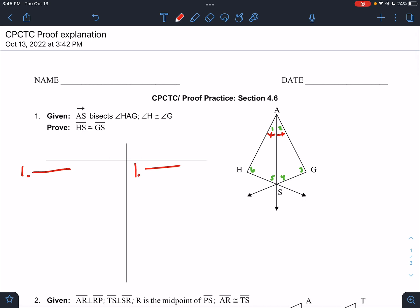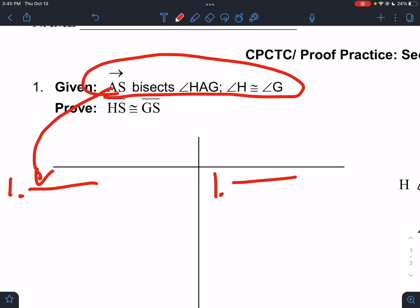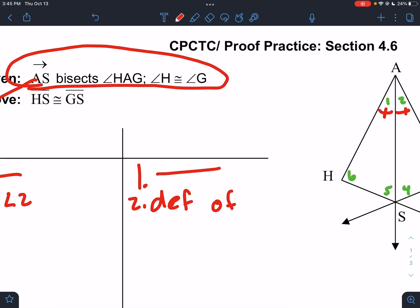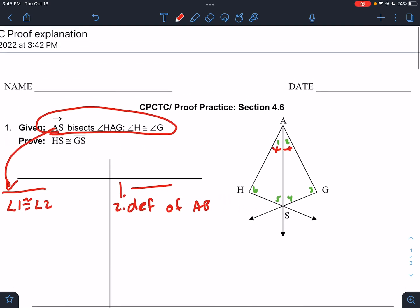So we have all of our given stuff. I'm not going to rewrite it. But really, it's all of this goes here, right? You can rewrite it if you want. I'm not going to rewrite it. But we know, based off that, that angle one is congruent to angle two. And that's just because of this word right here, bisect. It's the definition of angle bisector.